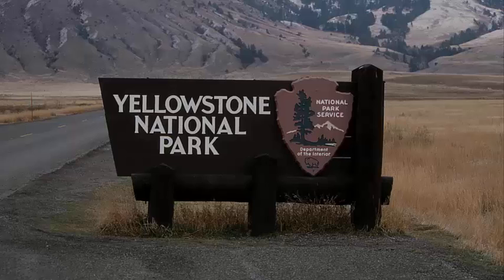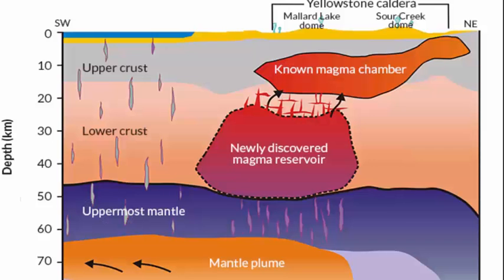Scientists have found something seriously weird beneath Yellowstone. There's a massive lump of liquidized, carbon-rich rock hiding hundreds of kilometers beneath Yellowstone's supervolcano and the greater western United States area.